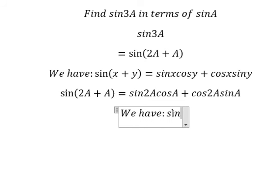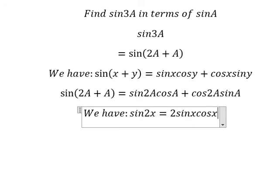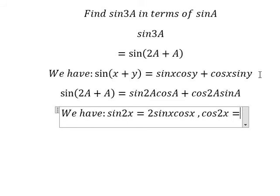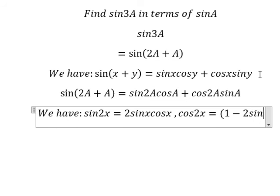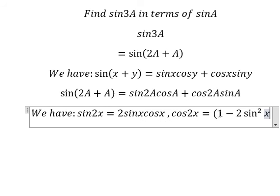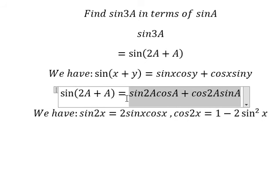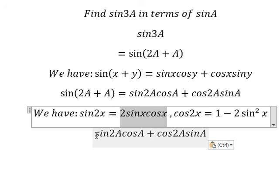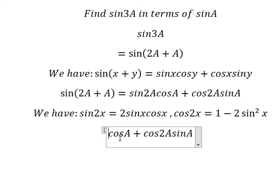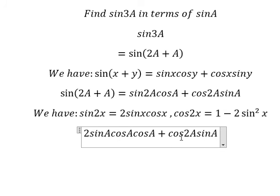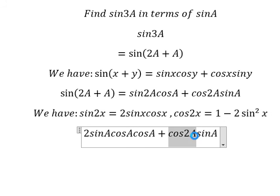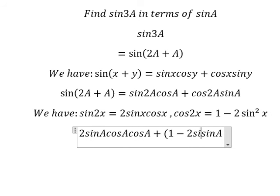Next, we apply another formula: sin(2a) = 2sin(a)cos(a), and cos(2a) can be changed into 1 minus 2sin²(a). So we substitute sin(2a) with 2sin(a)cos(a), and for cos(2a) we substitute 1 minus 2sin²(a).